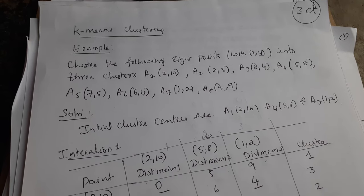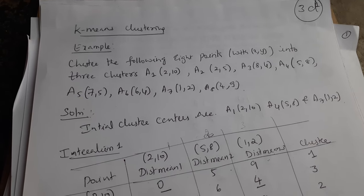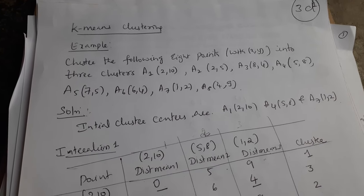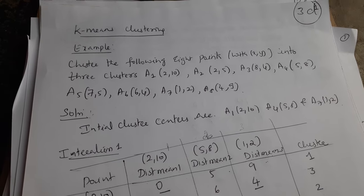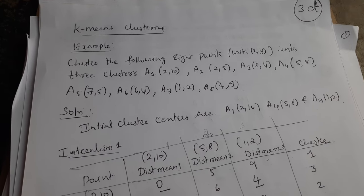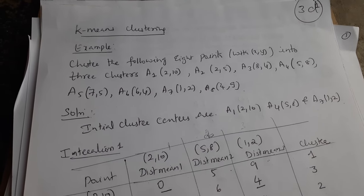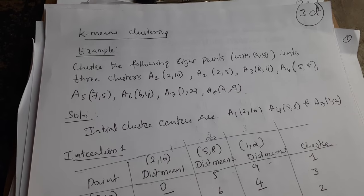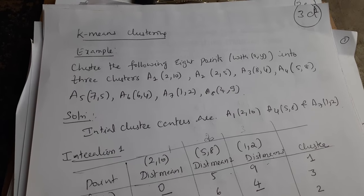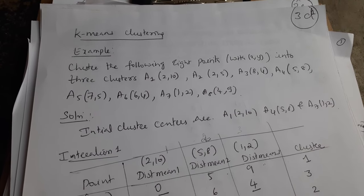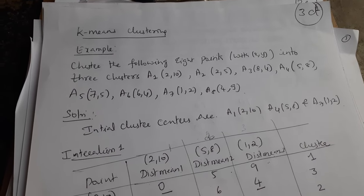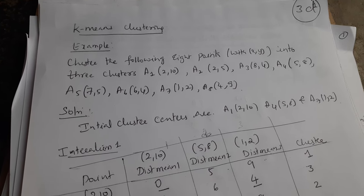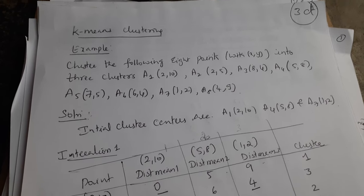Today we will see an example of k-means clustering. In the previous video I explained the concept of k-means clustering — grouping data points based upon similarity. The similarity measure we use is the Euclidean distance formula. So let us see one example here.